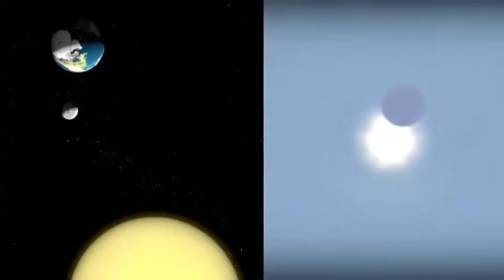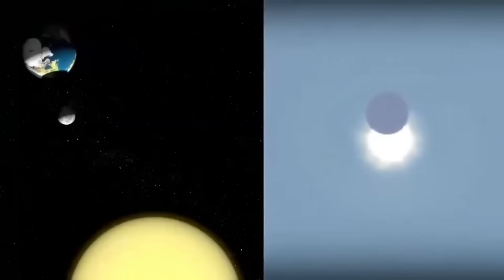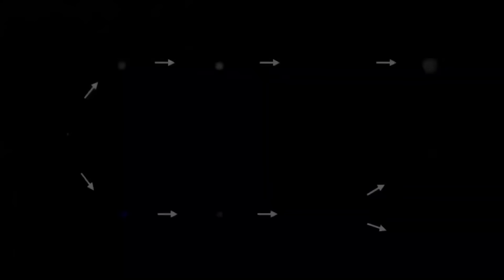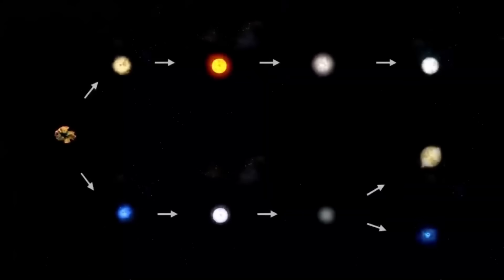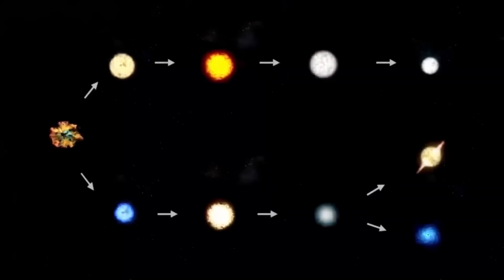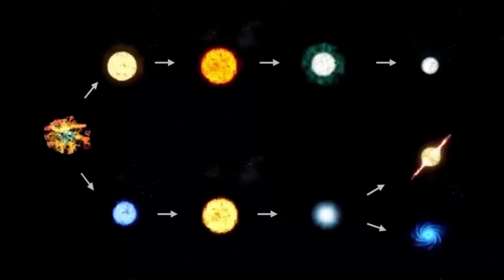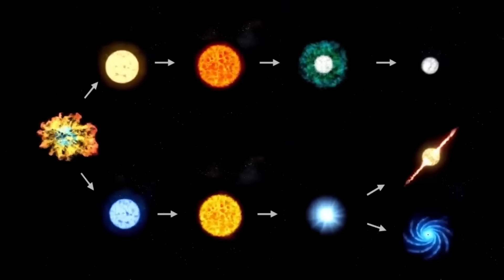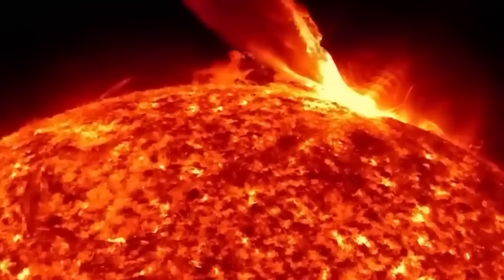To put this into perspective, imagine a star so massive that if it were to replace our sun, its surface would extend well beyond the orbit of Mars, enveloping not only Mars but also Mercury, Venus, and Earth. Betelgeuse's sheer size alone speaks to the tremendous scale of this celestial body and the extraordinary processes unfolding within it.